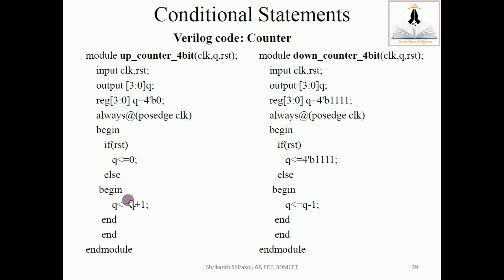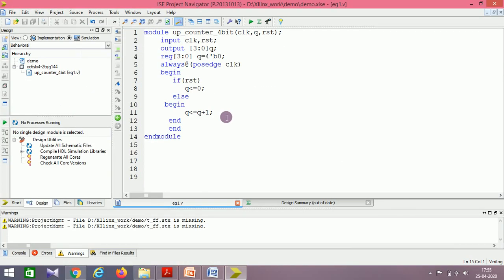Here are the same codes: up counter and down counter of 4-bit. We have made some change—we just removed this begin and end as the else part is having only a single statement. You can also see that here the assignment is non-blocking. In down counter, whenever reset initialization is done to the maximum, and when reset is one Q should be made as 1111 (15 for 4-bit). Here Q should be decremented by one whenever it encounters a positive edge. We'll go to the Xilinx environment and check the simulations.